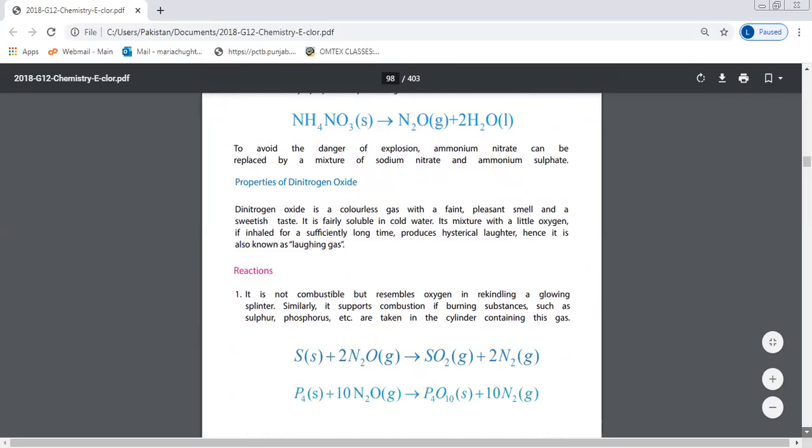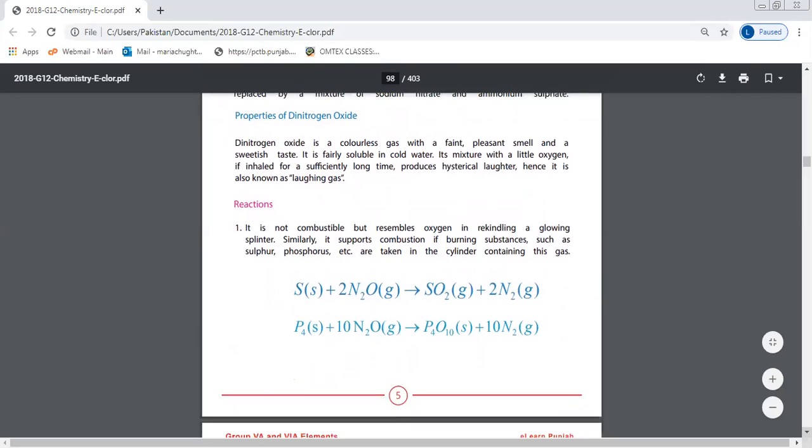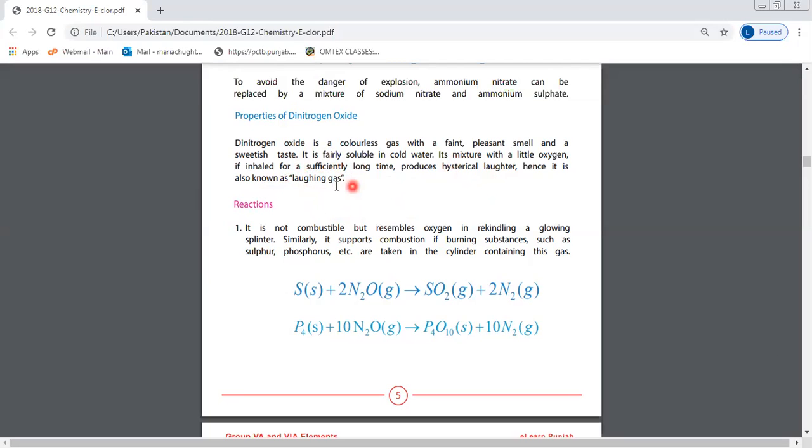Properties: Dinitrogen oxide is a colorless gas with a faint pleasant smell and a sweetish taste. It is fairly soluble in cold water. If inhaled with a little oxygen for a sufficiently long time, it causes hysterical laughter, which is why we call it laughing gas. But actually it is dangerous to inhale.